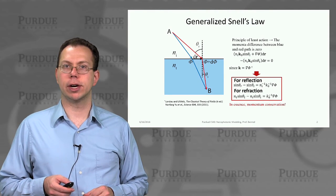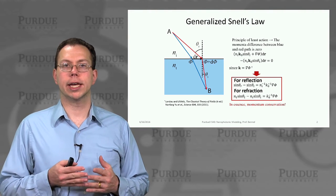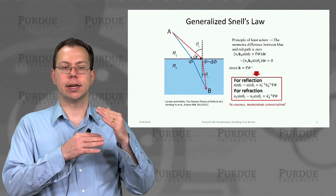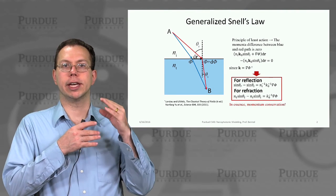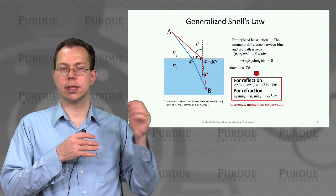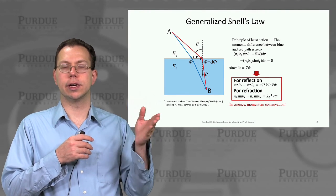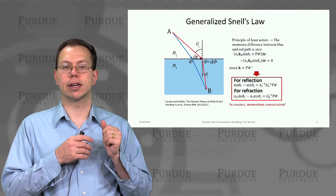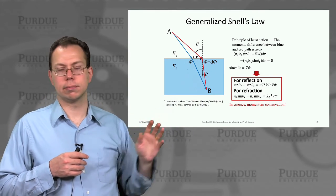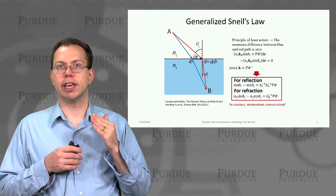But first let me start by explaining what a metasurface really is. Essentially, instead of having an ordinary interface between two dielectric materials, A and B in this case, with indices Ni and Nt, the incident and transmitted refractive indices, you actually have this extra region in the middle, basically on the surface at that interface, which has a phase.